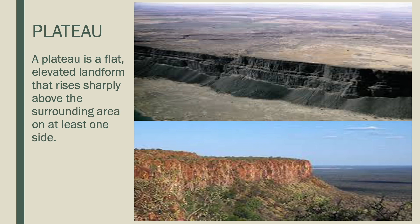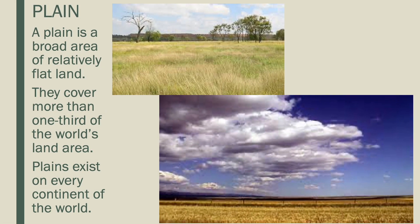Another type of landform is a plateau. A plateau is a flat elevated landform that rises sharply above the surrounding area on at least one side. Another type of landform is a plain. A plain is a broad area of relatively flat land. Plains cover more than one-third of the world's land area and exist on every continent.